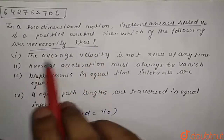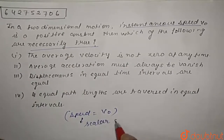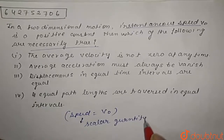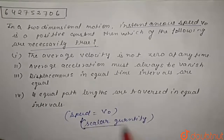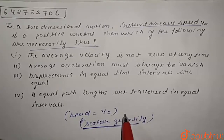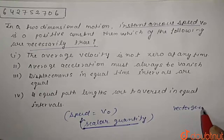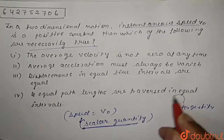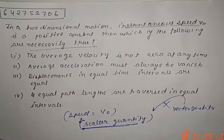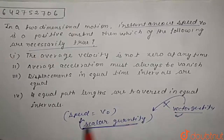Option one says that the average velocity is not zero at any time. Now, speed is a scalar quantity and we can compare only scalar quantities with scalar quantities. We can't compare a vector quantity with a scalar quantity, because vector quantities have a particular direction but scalar quantities don't.